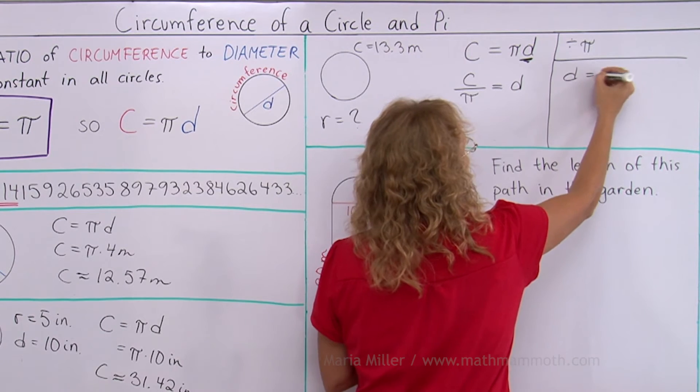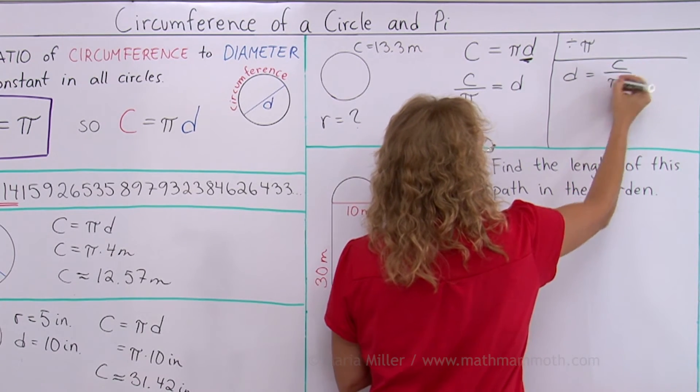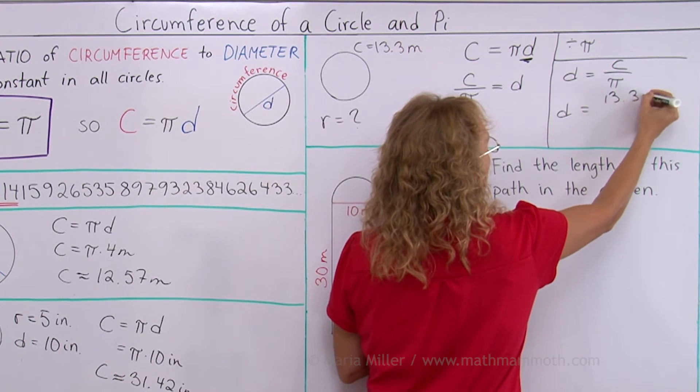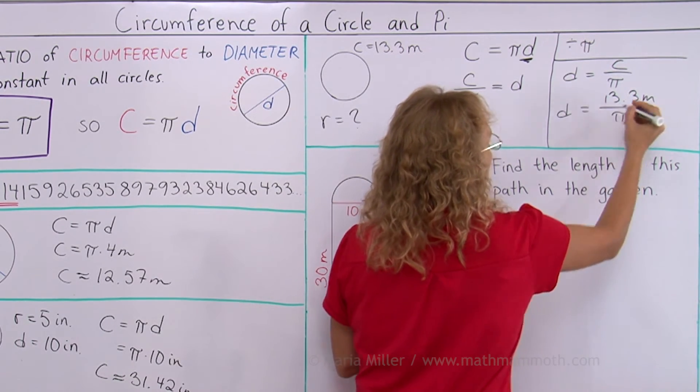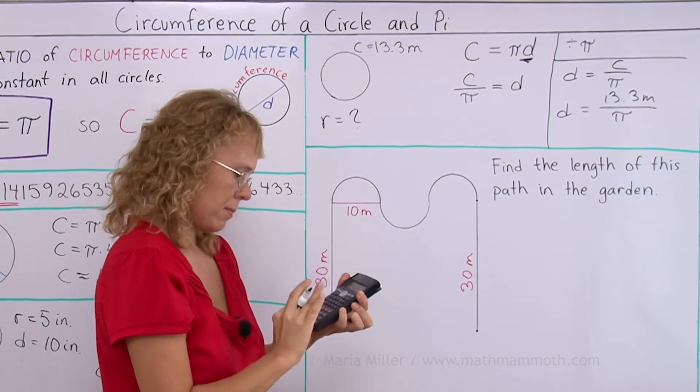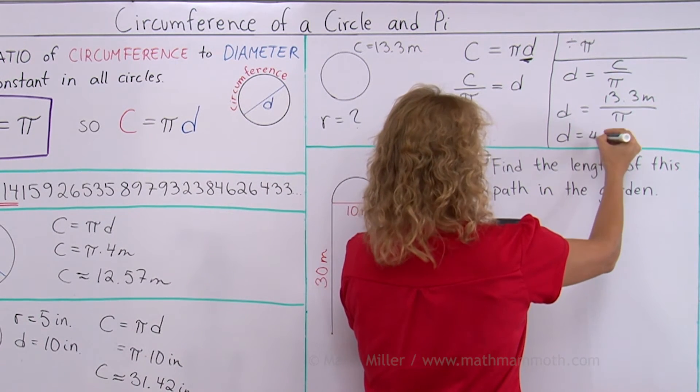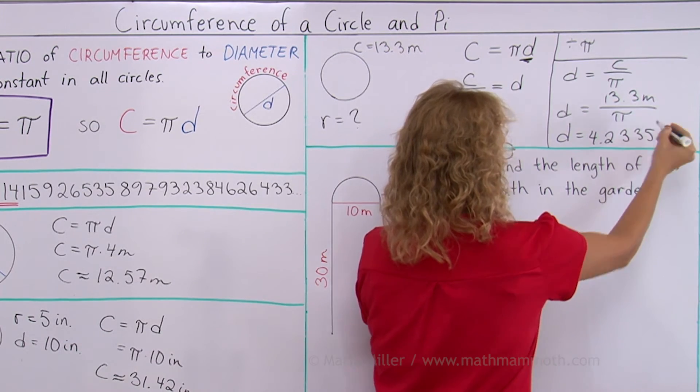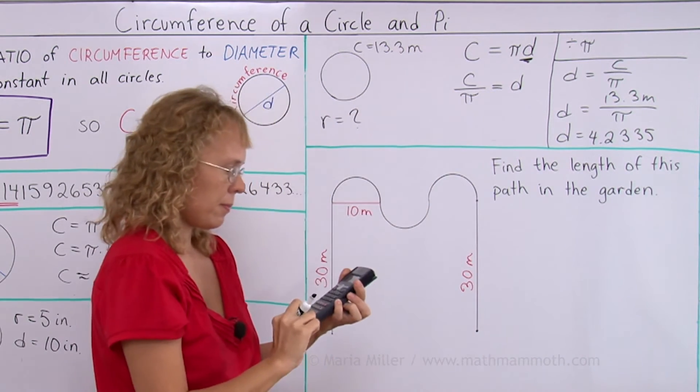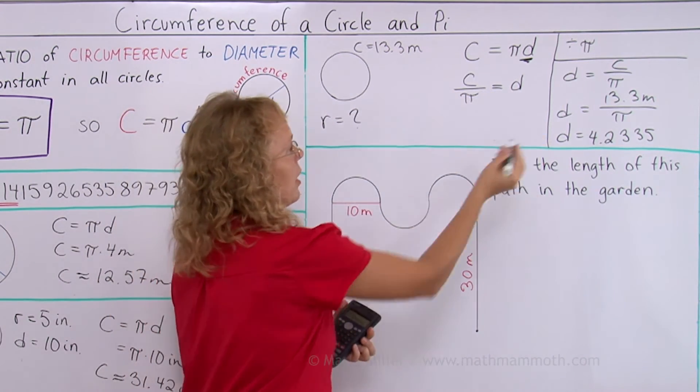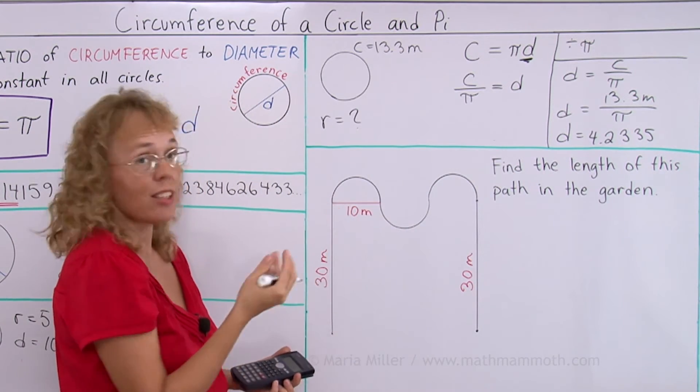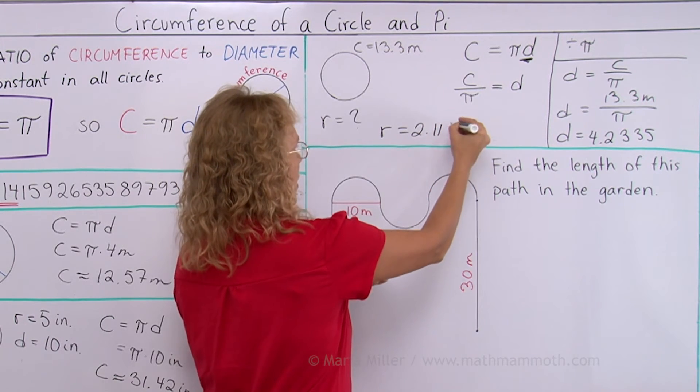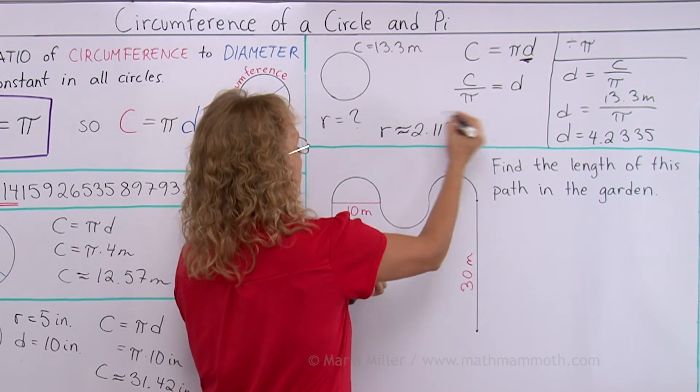Okay, diameter equals circumference divided by pi. So now I calculate 13.3 meters divided by pi. And that is 4.235 and so on. And then from that we take half of it. So you divide the diameter by 2 and we will get R equals radius equals 2.117 approximately meters.